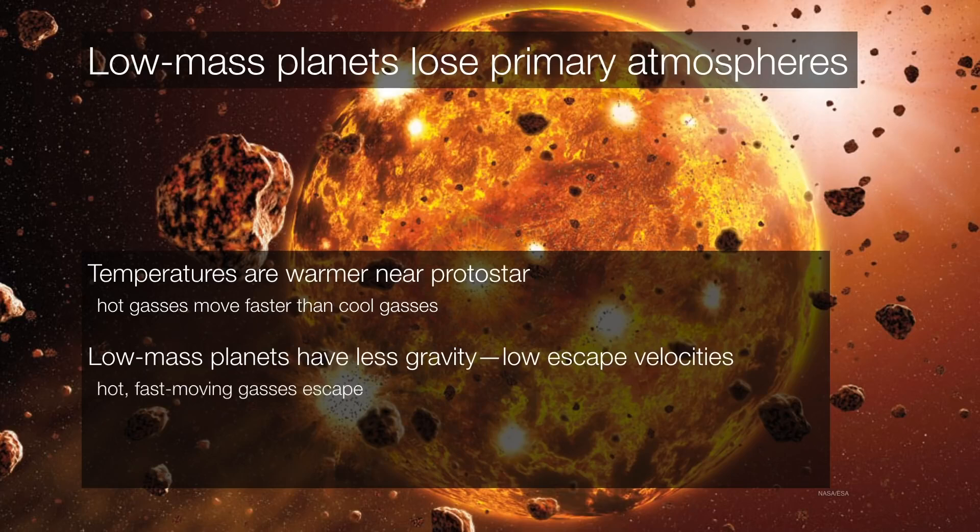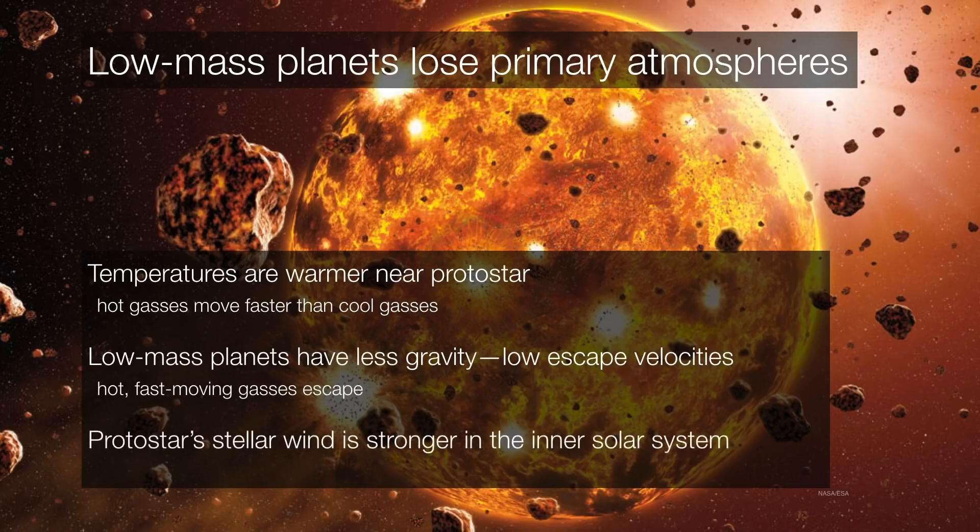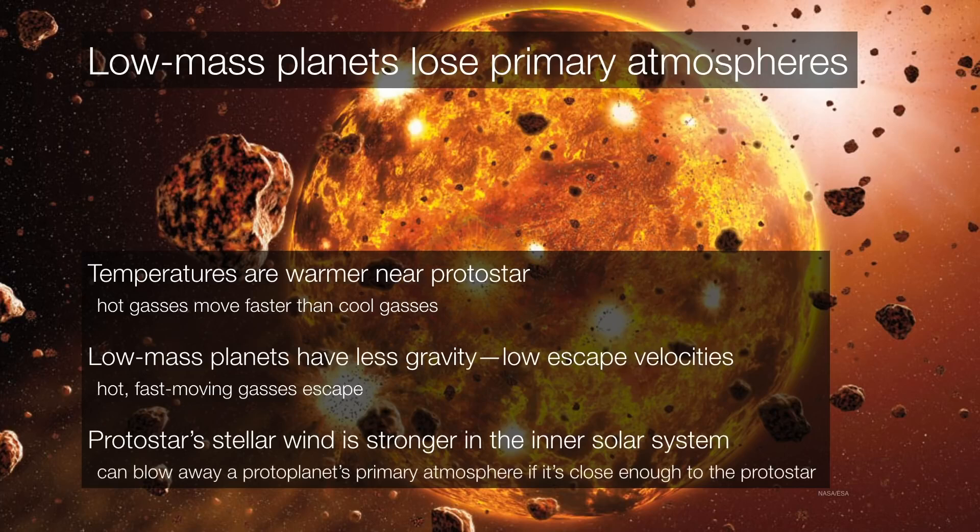Remember, the hotter they are, the faster they're going to be moving. They're also closer to the proto-sun. That means there's a stronger stellar wind coming from the proto-sun, which just makes it that much harder for these lightweight volatiles to stick to the proto-planets. Any proto-planetary atmosphere of the inner solar system is just going to be blown away by the sun.